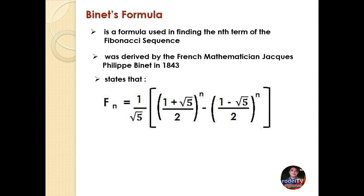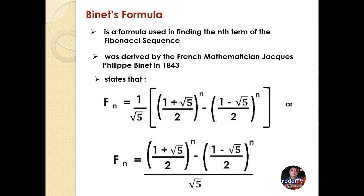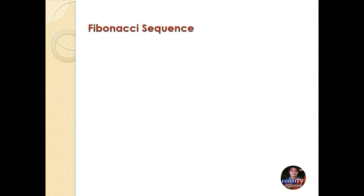The formula states that F sub n is equal to 1 over the square root of 5 times the quantity of 1 plus square root of 5 all over 2 raised to the power of n minus the quantity of 1 minus square root of 5 all over 2 raised to the power of n. Or simply, F sub n equals the quantity of 1 plus square root of 5 over 2 raised to the power of n minus the quantity of 1 minus square root of 5 over 2 raised to the power of n, all over square root of 5.